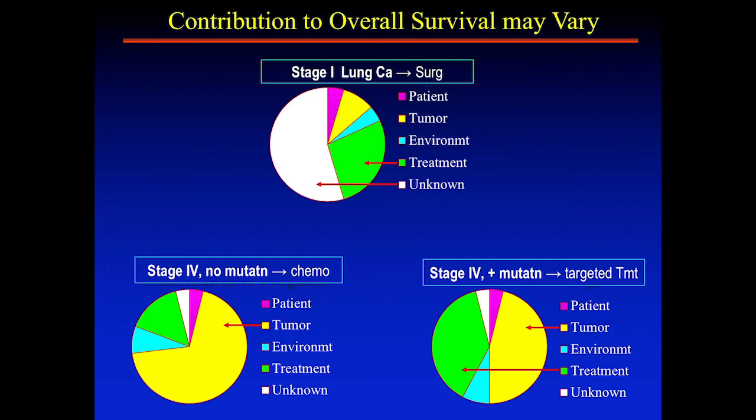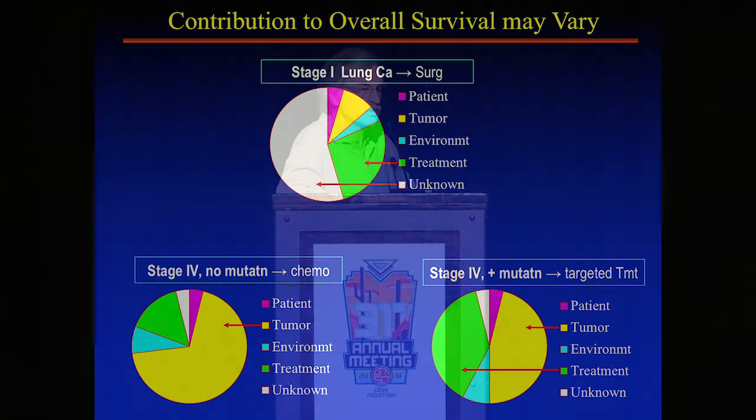Treatment may not drive prognosis much for a stage 4 patient without a mutation, but if they have a mutation and receive targeted therapy, that may be a very different factor. Really, predicting prognosis is a complicated thing depending on many different factors. We have to do something more sophisticated than just saying 'you're stage 1A, but if your age is over 75 or you have a mutation, bump it up or down a notch' — that really doesn't meet what we want.